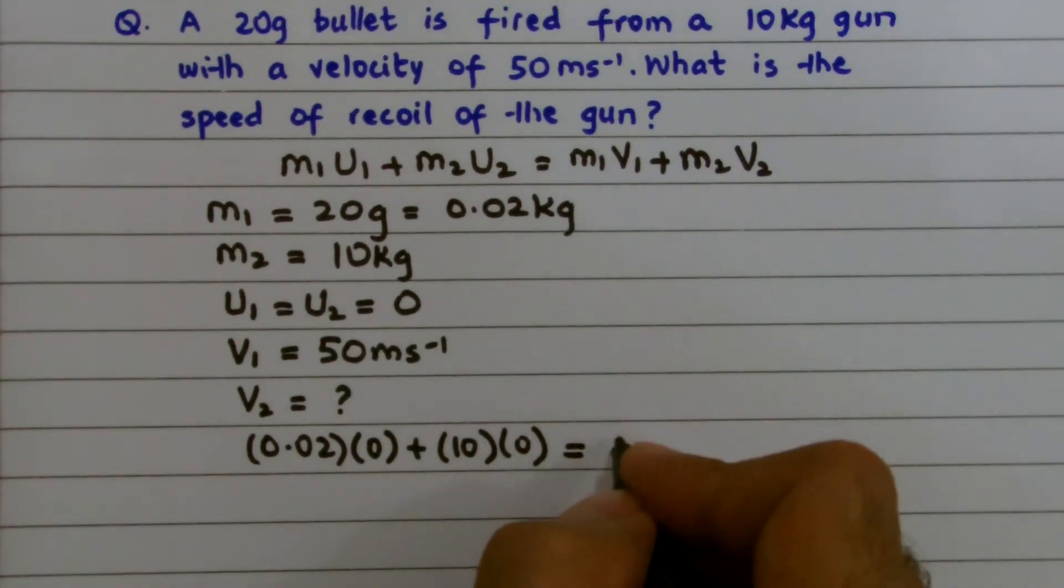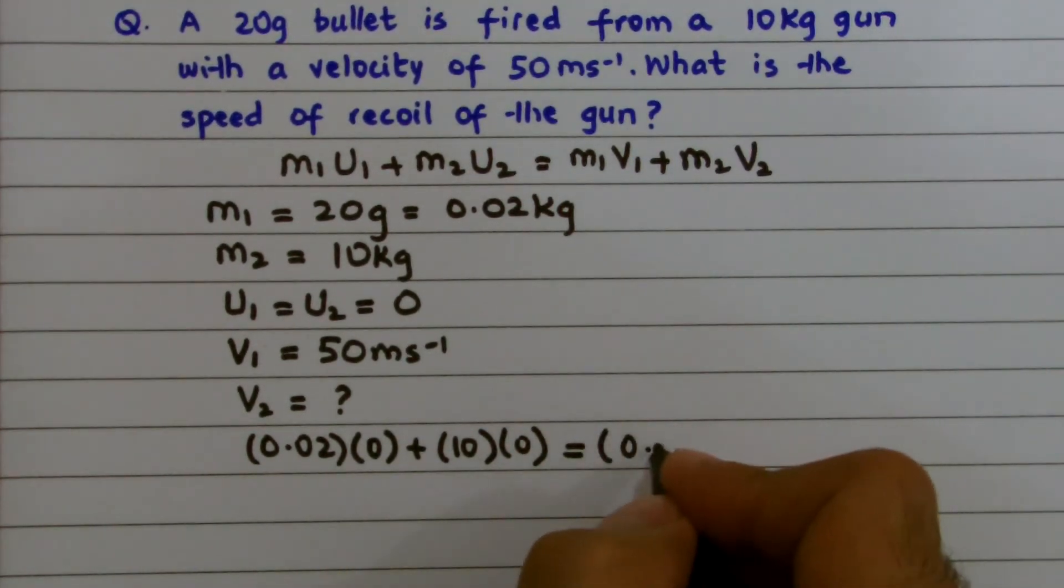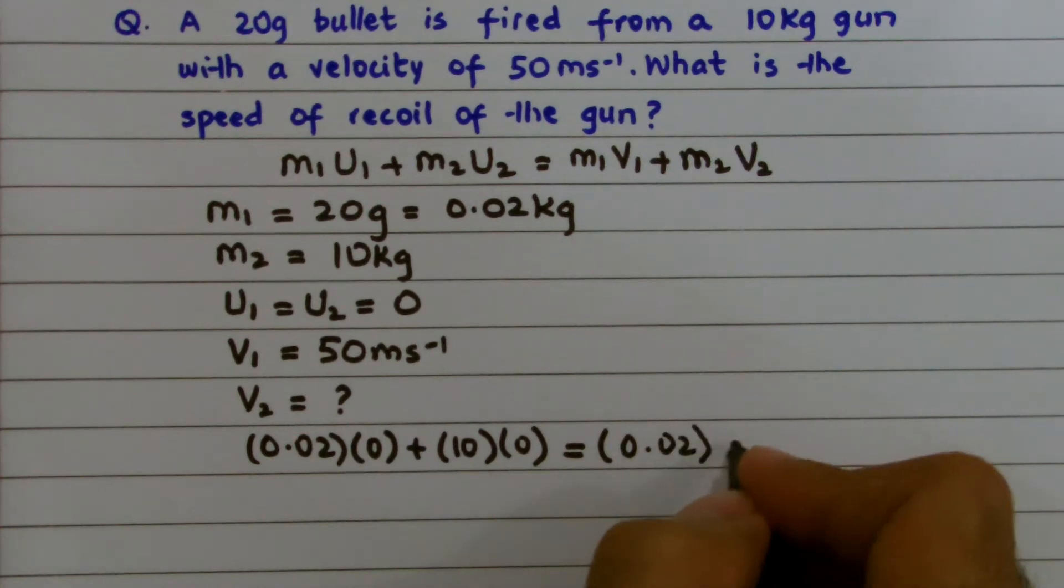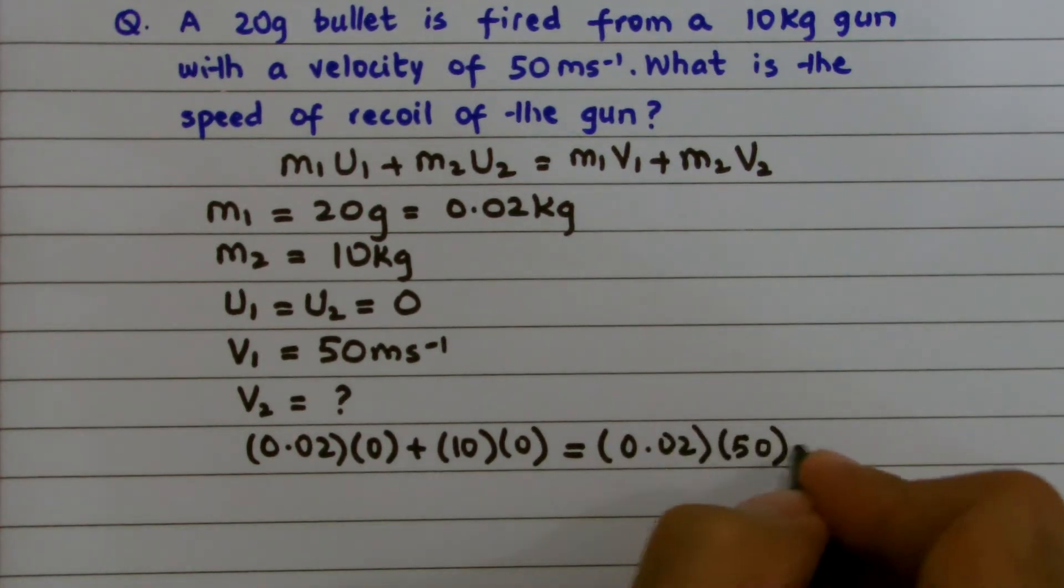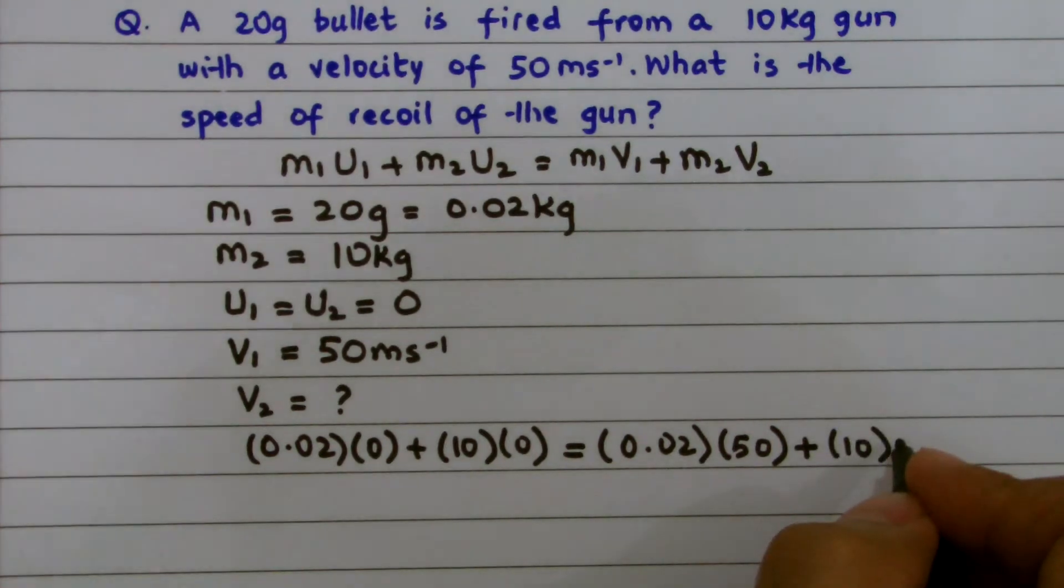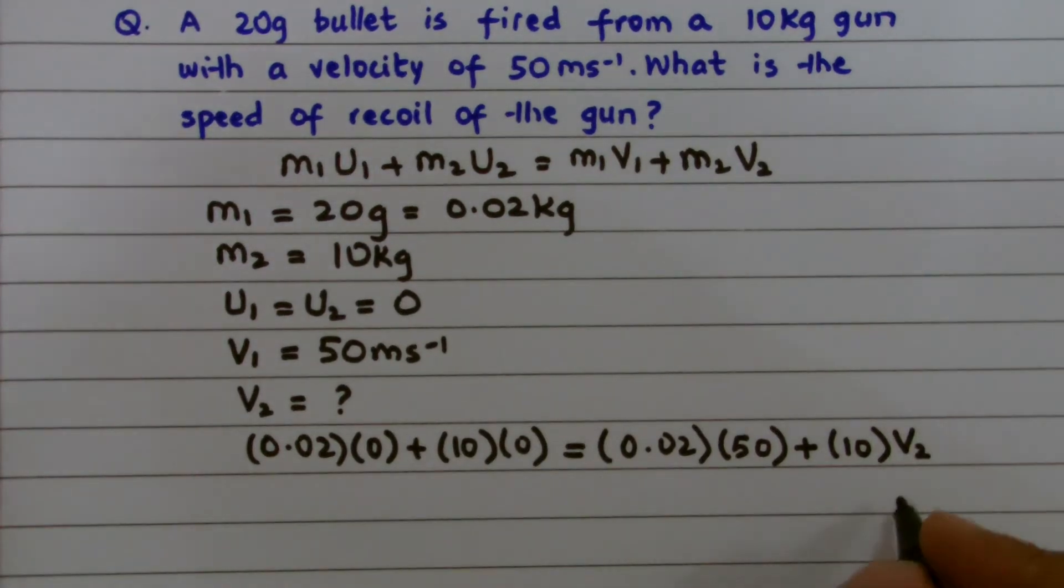equals M1, that is 0.02, V1, that is 50, and M2 again, that is 10, V2. The value of V2 is required. We have to calculate this.